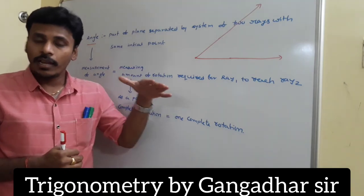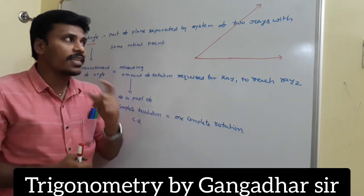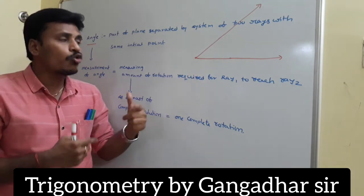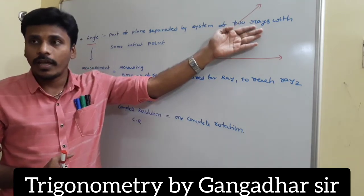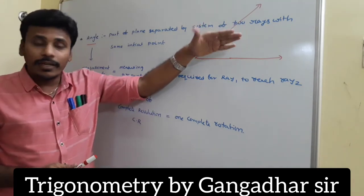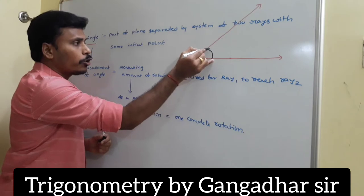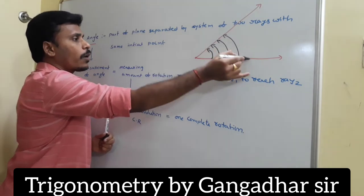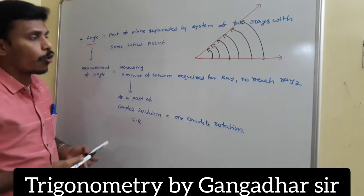In yesterday's class we discussed about the angle, measurement of the angle, and the measurement of the complete revolution. What is angle? Angle is the part of the plane separated by the rays. Measuring an angle is nothing but measuring all the points in this region — that is, measuring the amount of rotation required for the initial ray to reach the position of the final ray. That amount of rotation is the measurement of the angle.